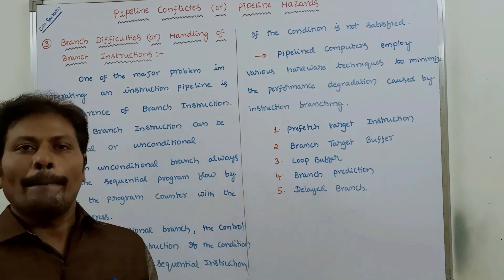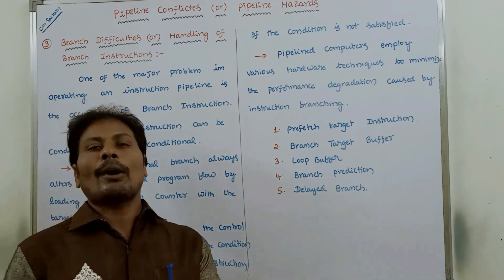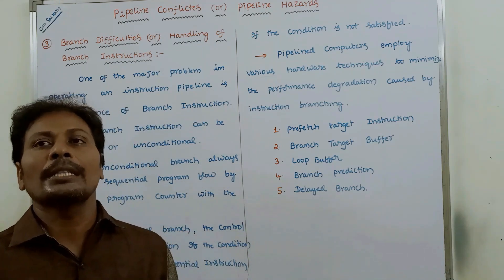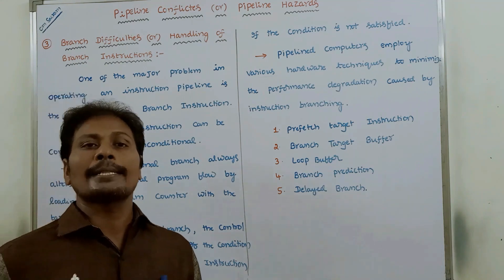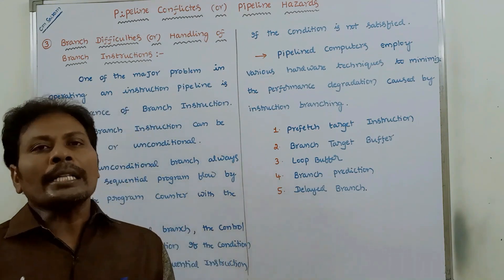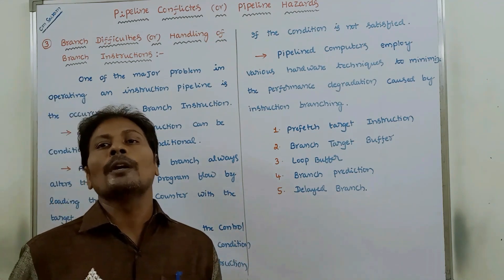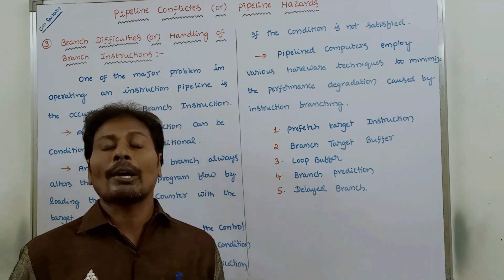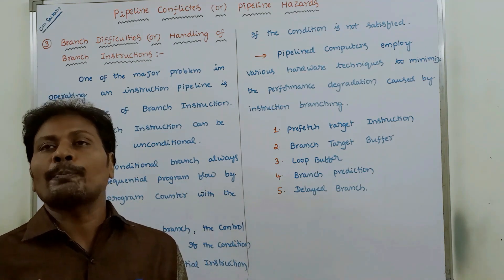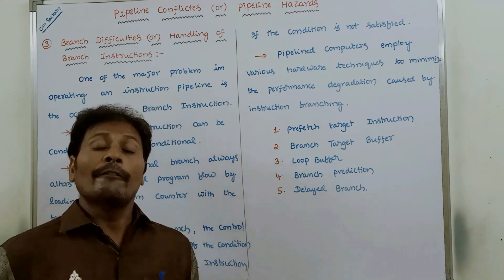One of the major problems that can occur in the instruction pipeline is the occurrence of branch instructions. A branch instruction is of two types: the first one is unconditional branch, and the second one is conditional branch. In unconditional branch, without any condition, we transfer the program control from the currently running instruction to the target instruction.